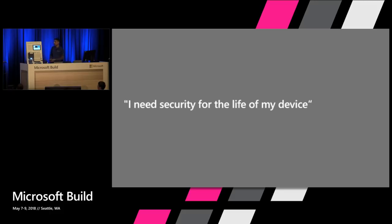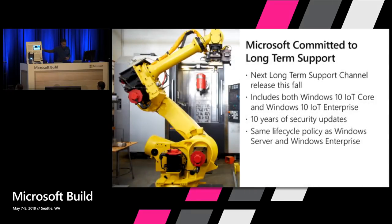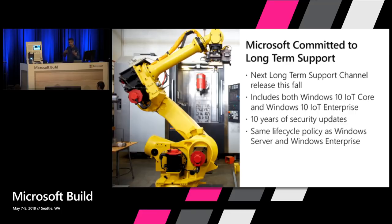Next, let's talk about security for the device. You have a device on a robot arm or in a factory — you want it secure and stable for a long time. This fall we have a solution called LTSC, a Long-Term Support Channel. This provides security updates without the need to take feature updates on your platform. If you have a device deployed in the marketplace, you don't want extra things disrupting the image or the capability you've built. With LTSC updates, you'll have security-only updates available to deploy at your need. For IoT Core this starts with the RS5 release; for IoT Enterprise, it's already available with the RS1 release in market now.